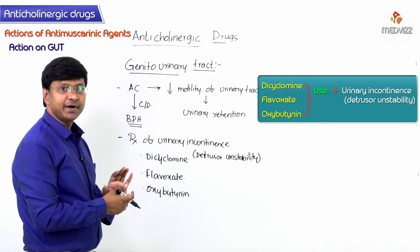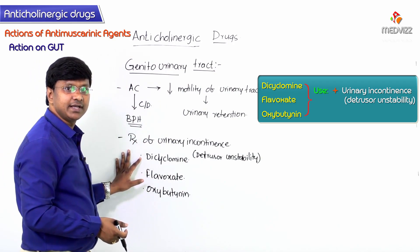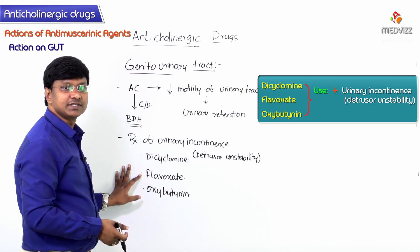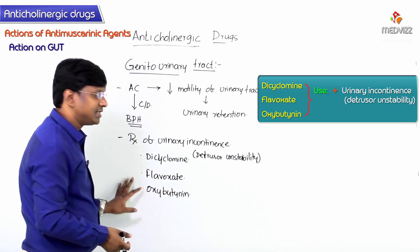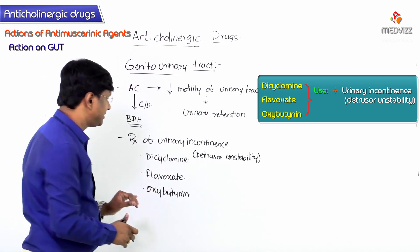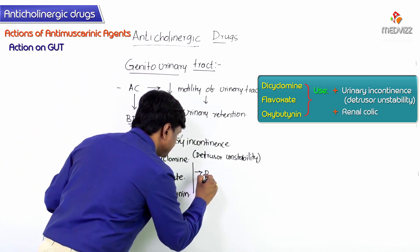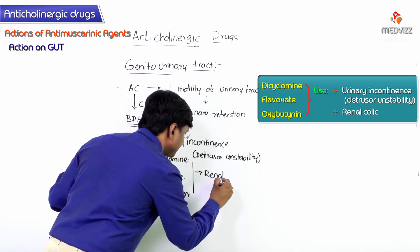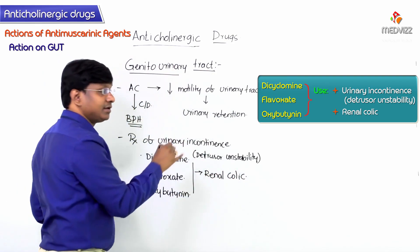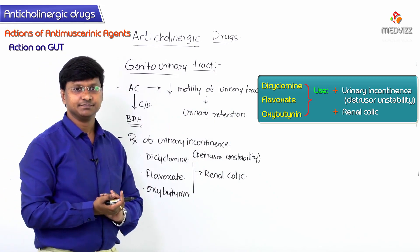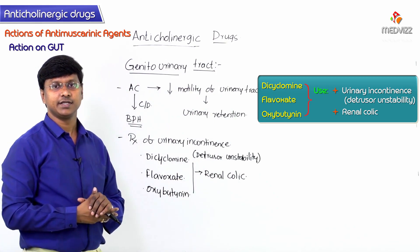Apart from urinary incontinence, dicyclomine, flavoxate, and oxybutynin are also useful in the treatment of renal colic, because these drugs will relieve the spasm.